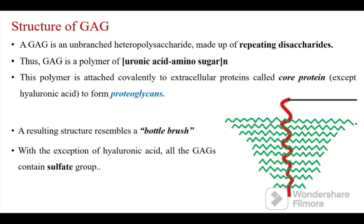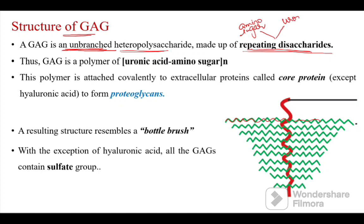A glycosaminoglycan (GAG) is an unbranched heteropolysaccharide made of repeating disaccharide units. These disaccharide units contain two different types of monosaccharides: one is an amino sugar (glucosamine or galactosamine) and the other is a uronic acid (glucuronic acid or iduronic acid). So a GAG is essentially a polymer of uronic acid and amino sugar.